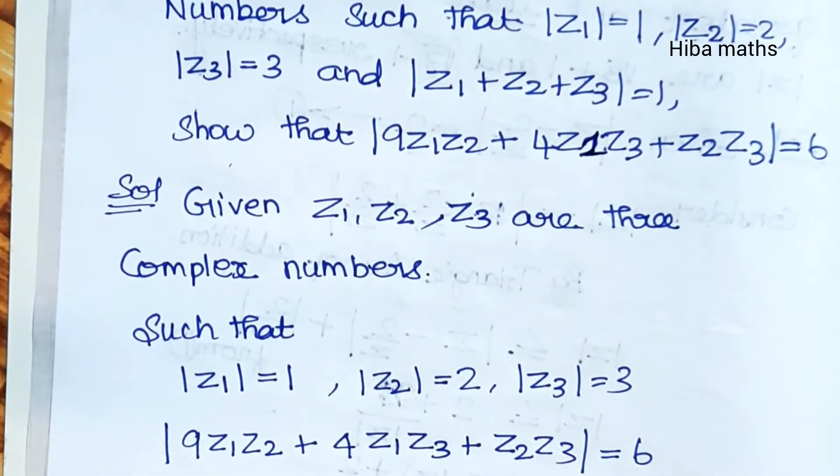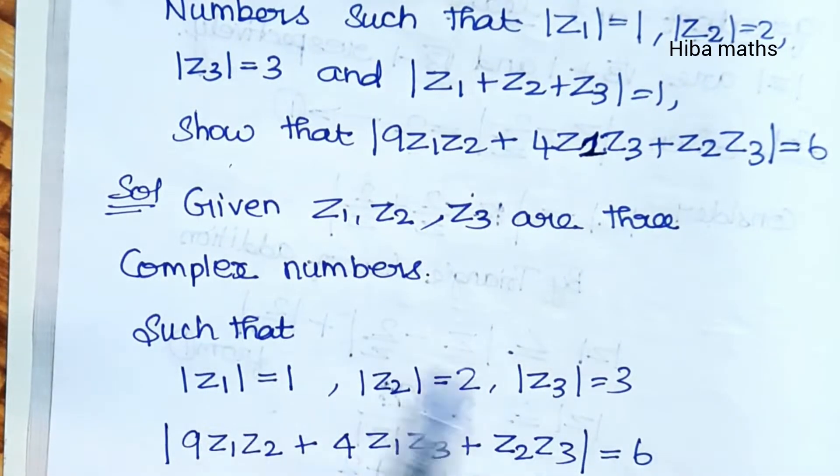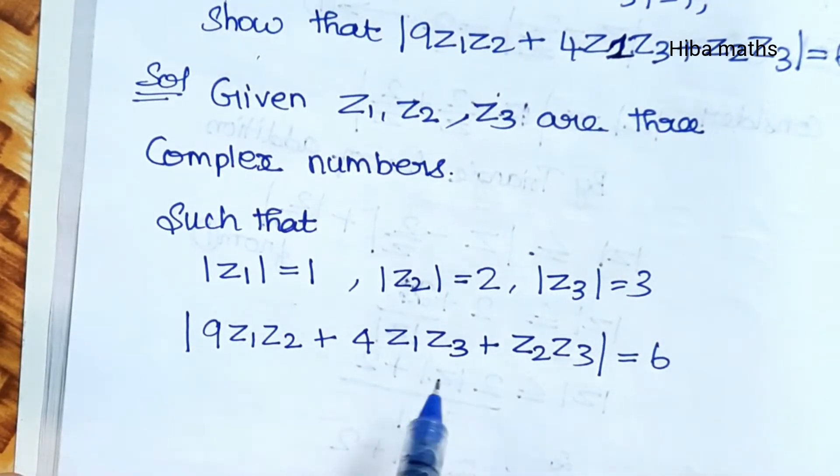So given: Z1, Z2, Z3 are three complex numbers and we need to prove it.